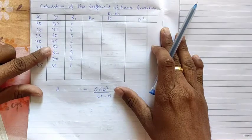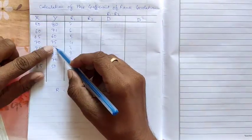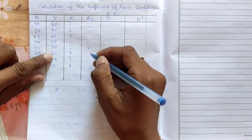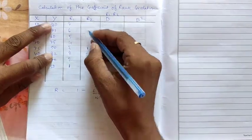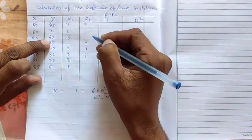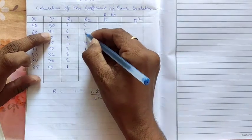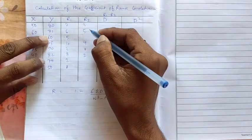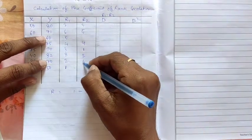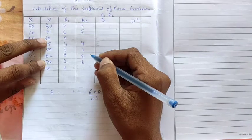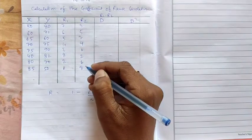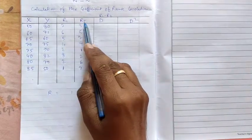So now let us find r2 also. So here rank 1 goes to 90. Then rank 2 will be 82. Then rank 3 will be 80. Then 75, rank 4 is 75. Then rank 5 is 71. Then rank 6 will go to 70. Then rank 7 will go to 60. And at the last 50 will get rank 8. So this way we have created r1 and r2.